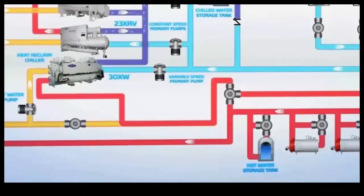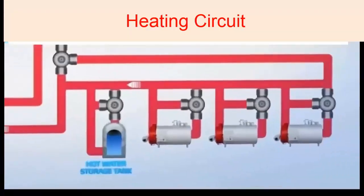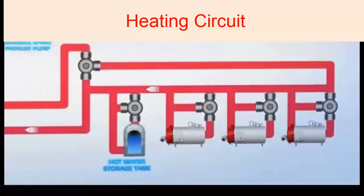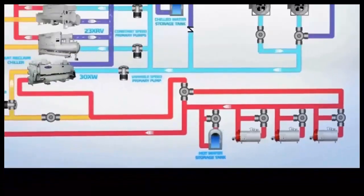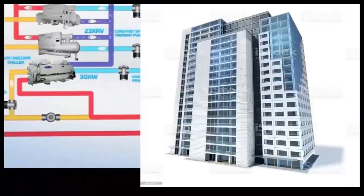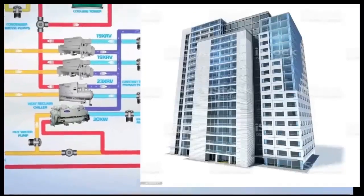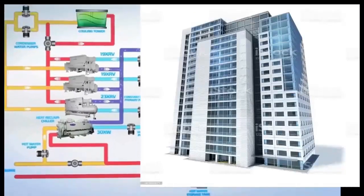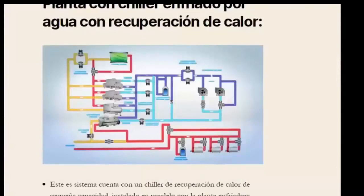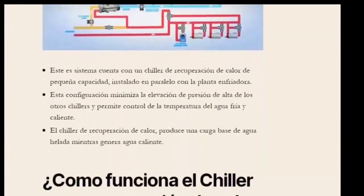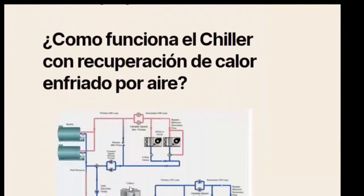The water can be heated to the temperature needed, or if more temperature is required, it can be sent to a boiler to finish heating. The advantage gained is that the boiler no longer receives water at room temperature — it receives it with preheating already applied. This brings considerable savings to the heating circuit and therefore to the entire building, all while keeping the entire building air-conditioned at the temperatures needed.